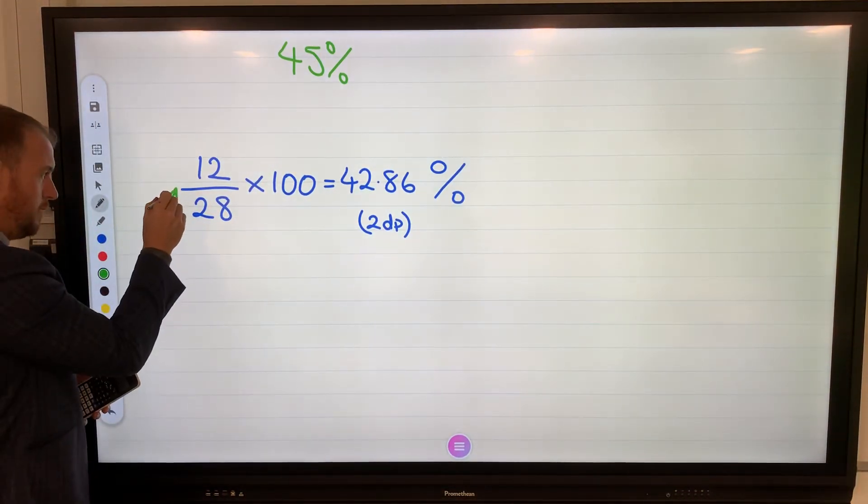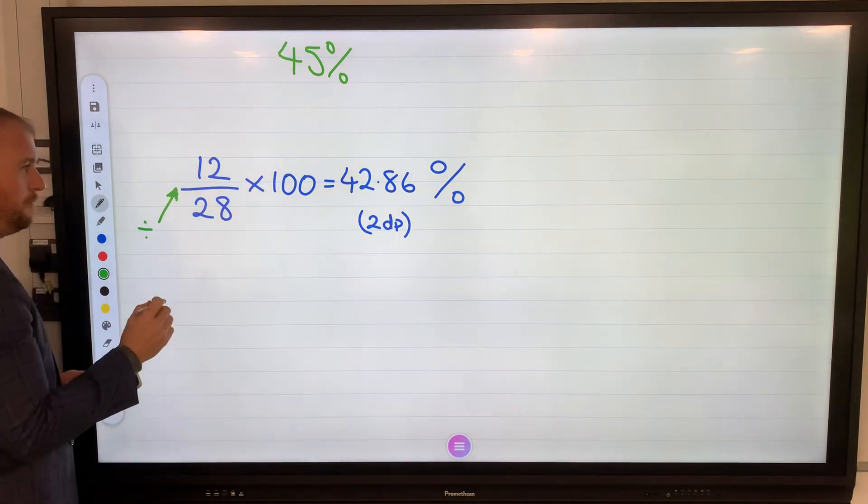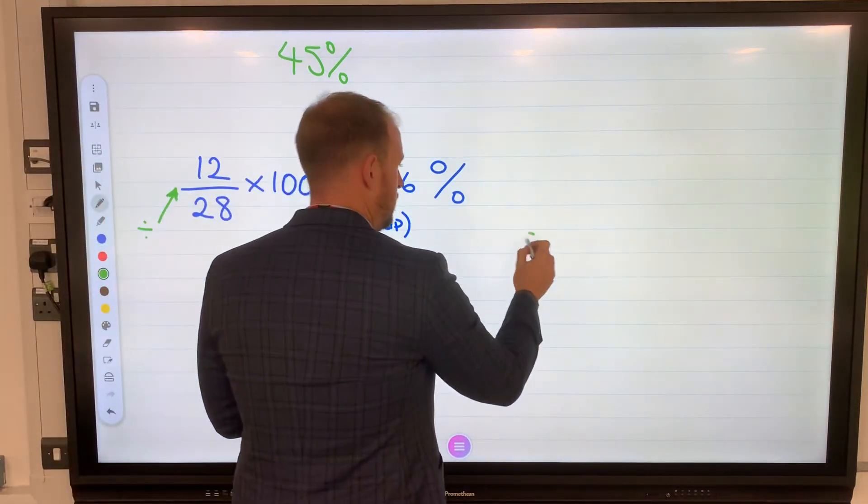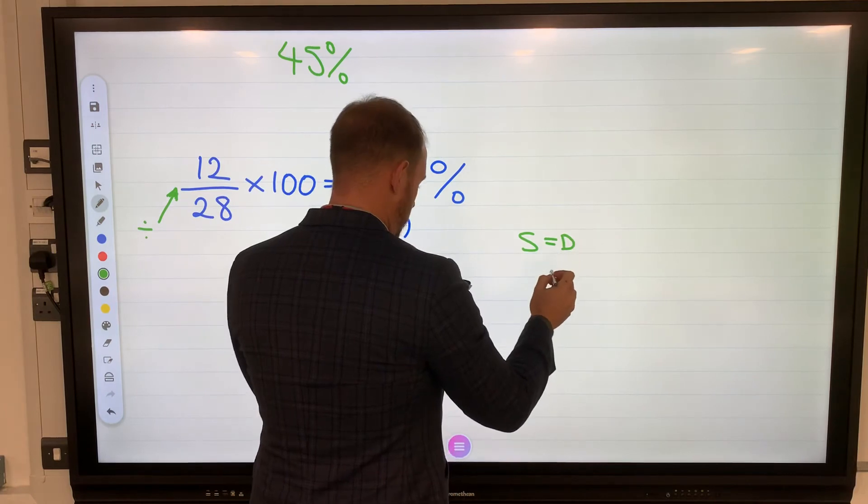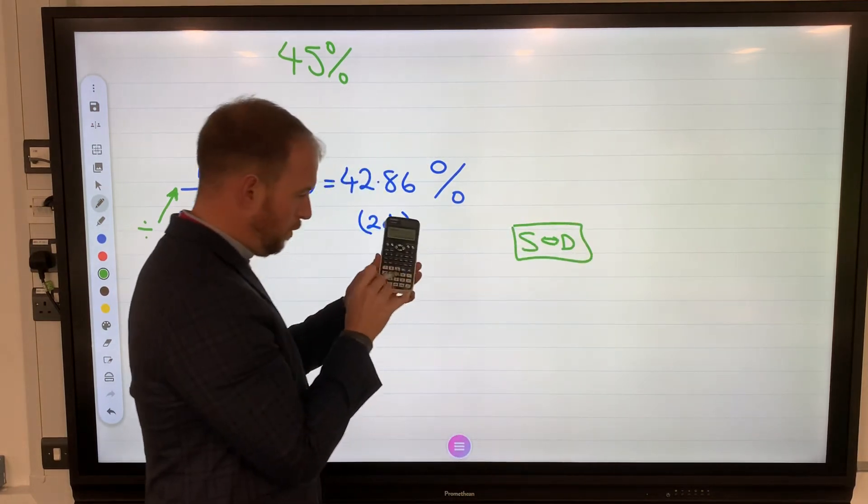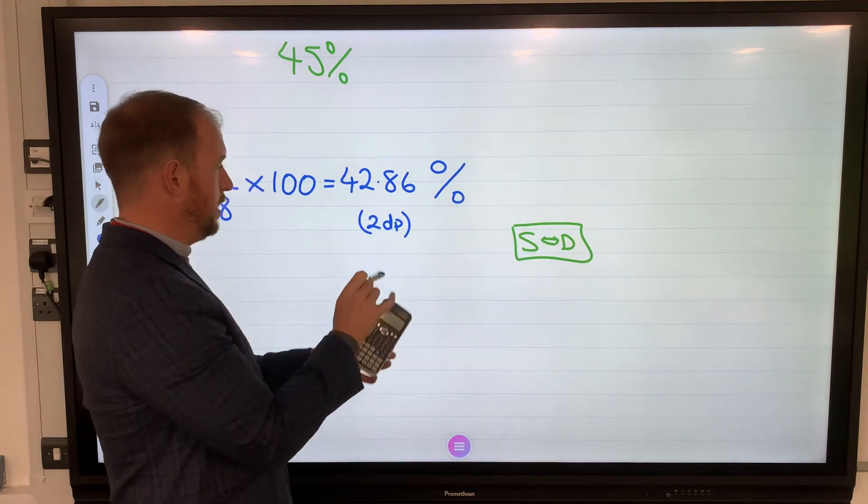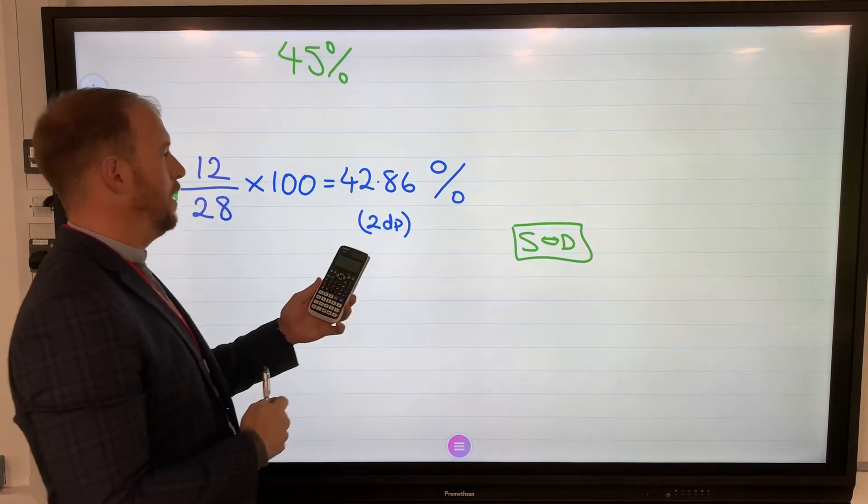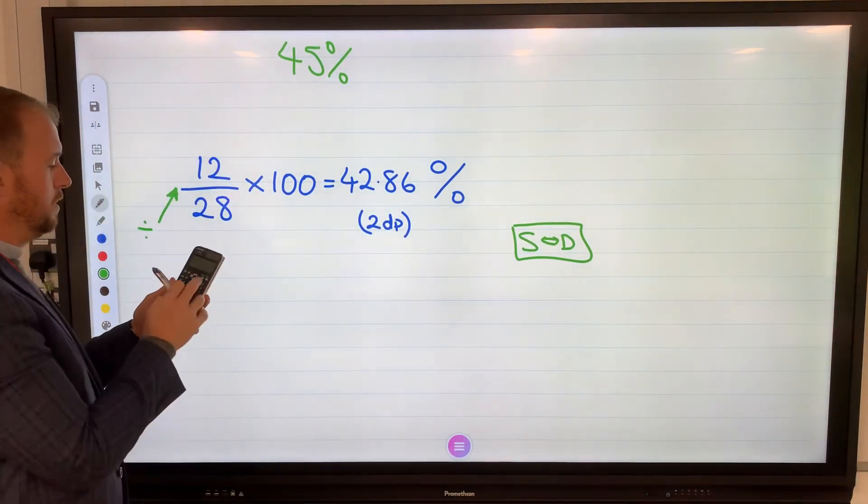Remember, that means divide. And obviously, on your calculator, you might have to use the SD button. We've got the arrows on the side here as well, which is that one button above the delete. Yes, I've rounded that. Some questions, you don't have to round them.